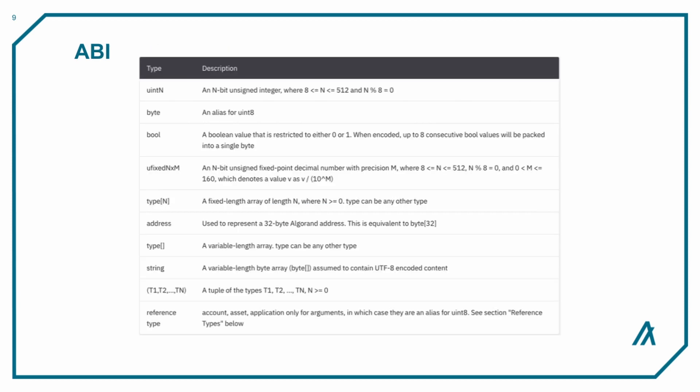Both languages offer a variety of types, such as tuples, addresses, and booleans, through an Application Binary Interface, or ABI. On Algorand, the ABI is a standard that defines how these types are encoded and decoded, while also defining how functions of a smart contract can be communicated between developers.